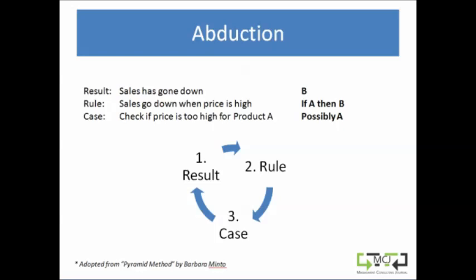Let's look at an example. The result that you see is that sales have gone down. The rule that you try to apply is that sales go down when price is too high. Then you try to check the case: you check if price is too high on product A.